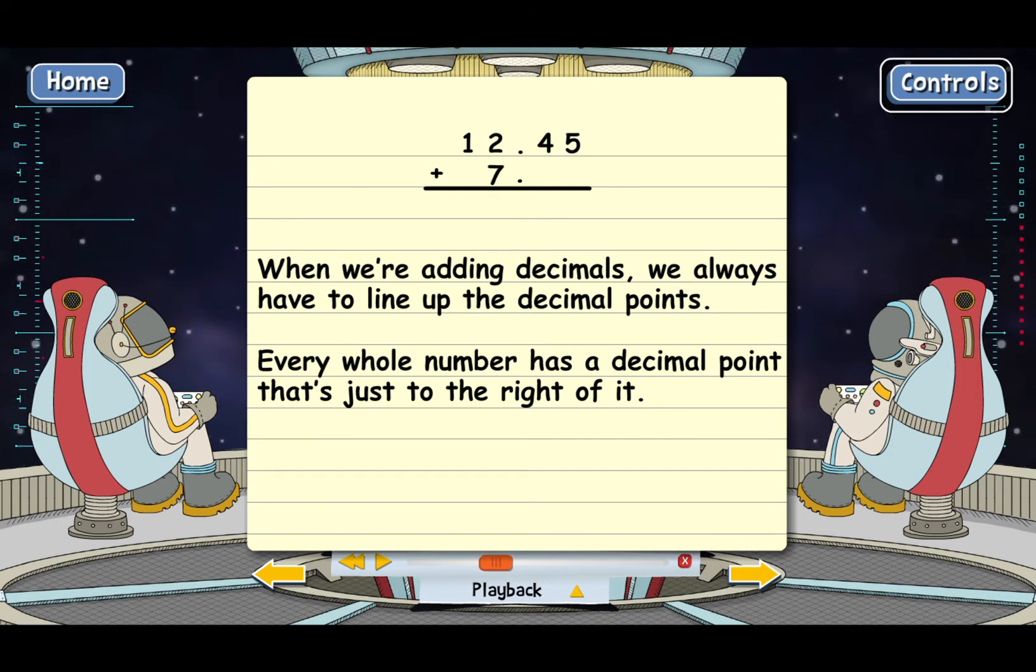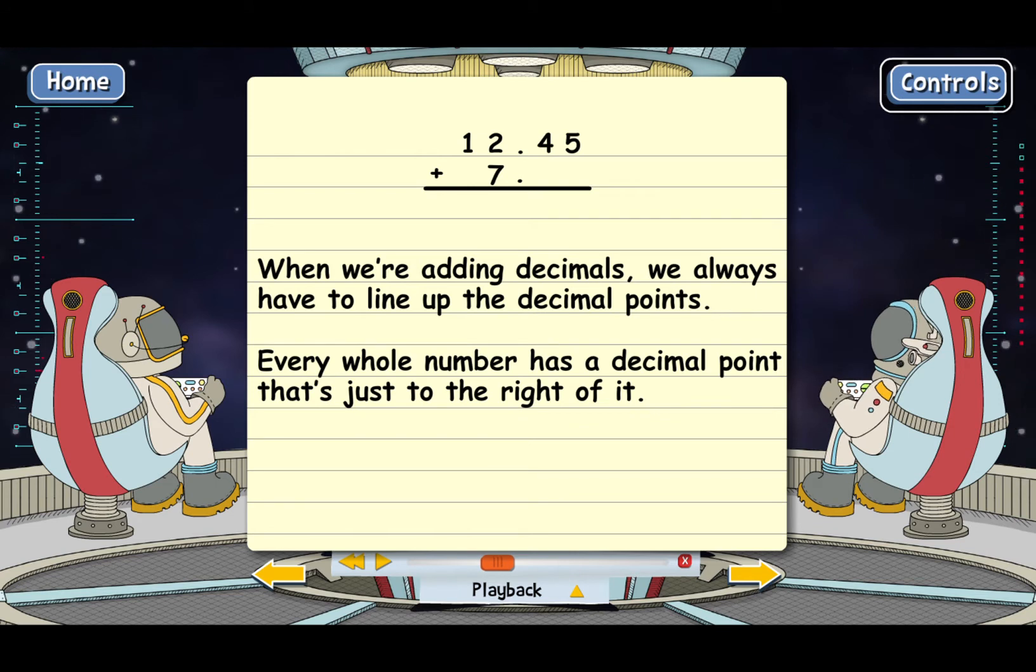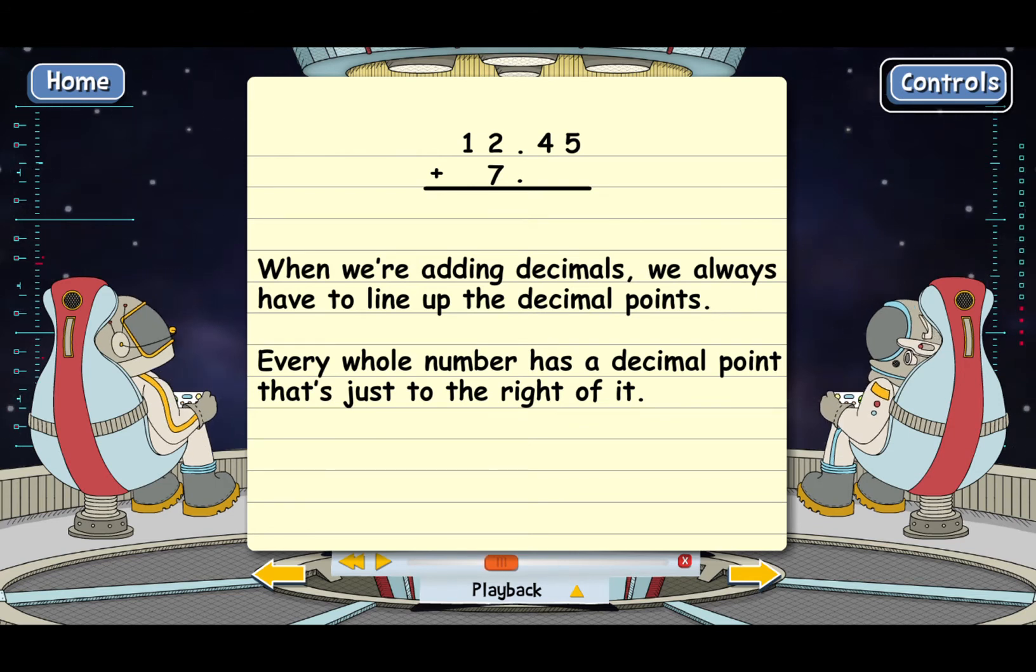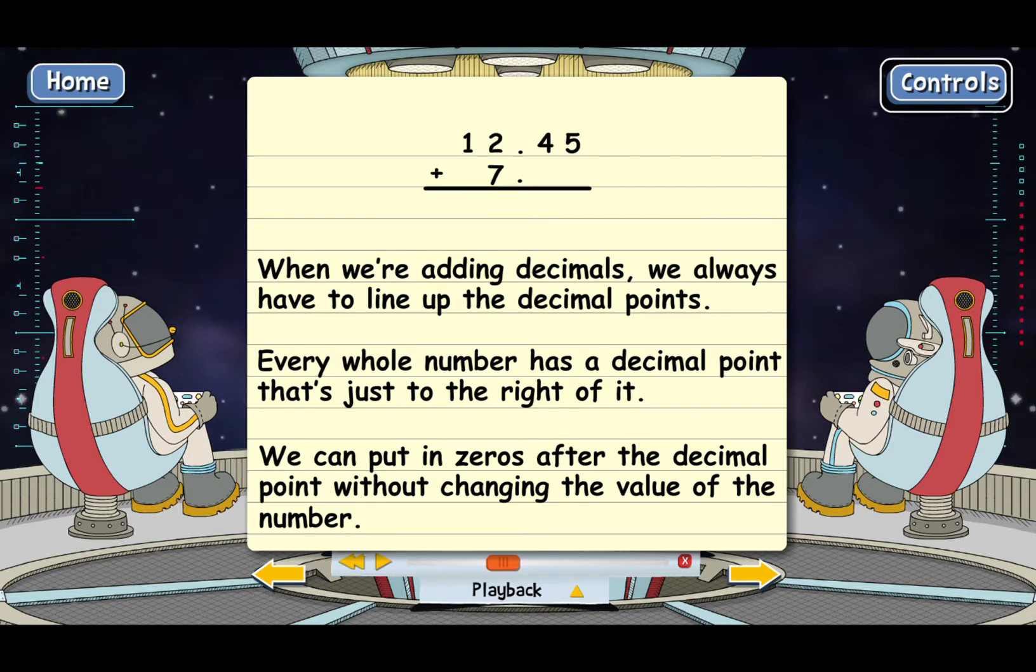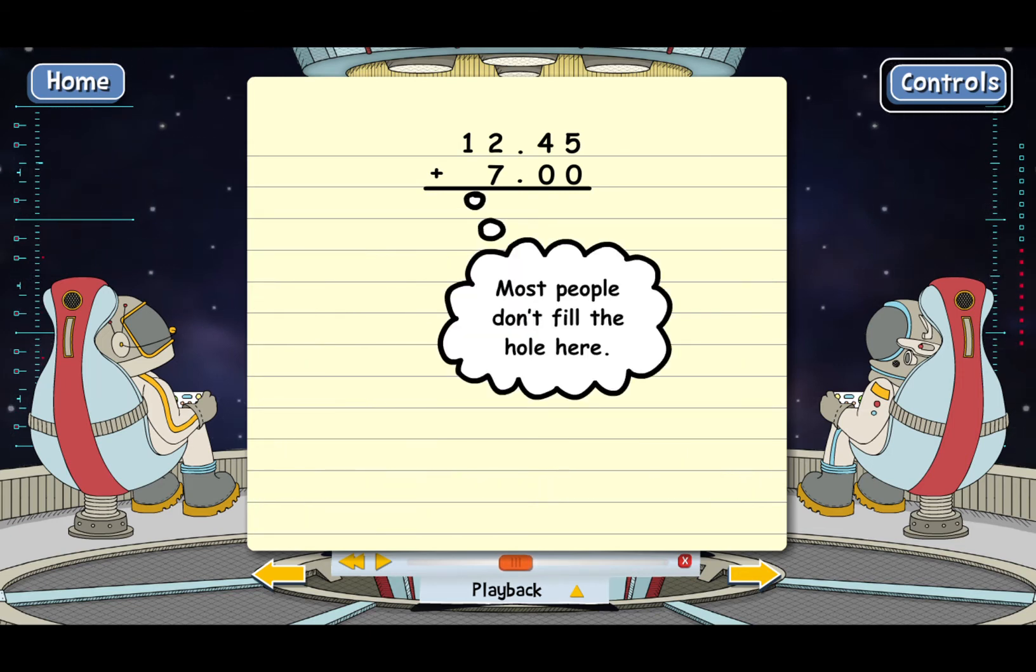We're still not quite ready to add because we need to fill these holes. You know that we can put in as many zeros as we want after the decimal point without changing the value of the number. So let's put in two zeros. That fills the holes under the 4 and the 5 in 12.45. Most people don't fill the hole to the left of the 7 in the tens place. You could do it if you wanted, but most people just leave that blank and think of it as a zero when they're adding that column.